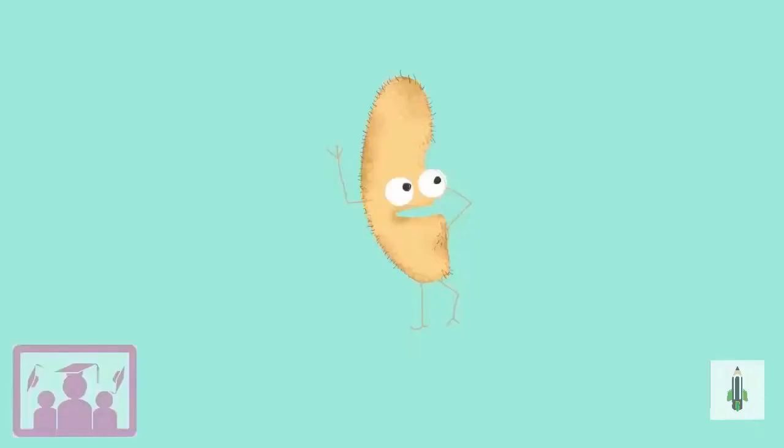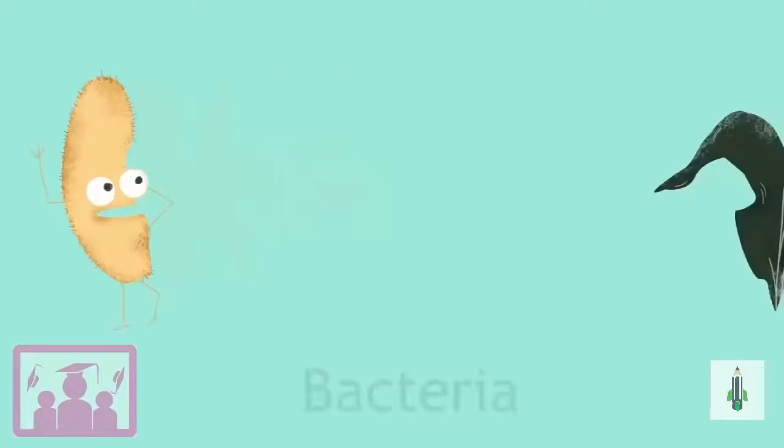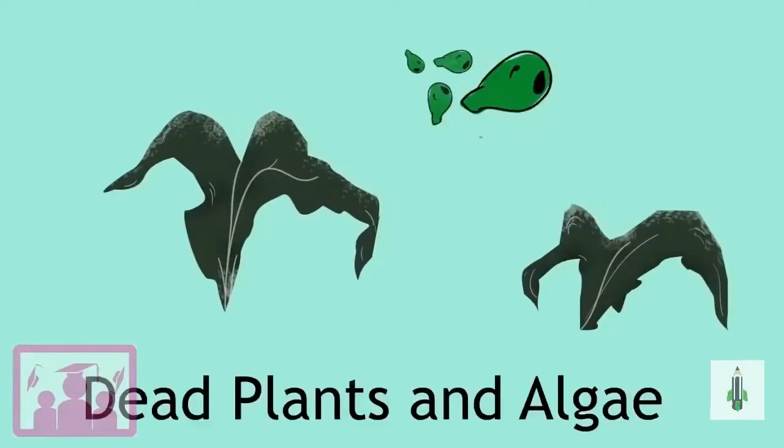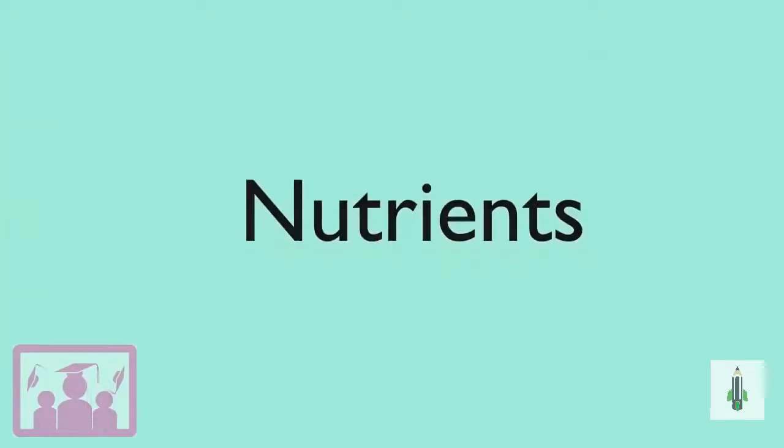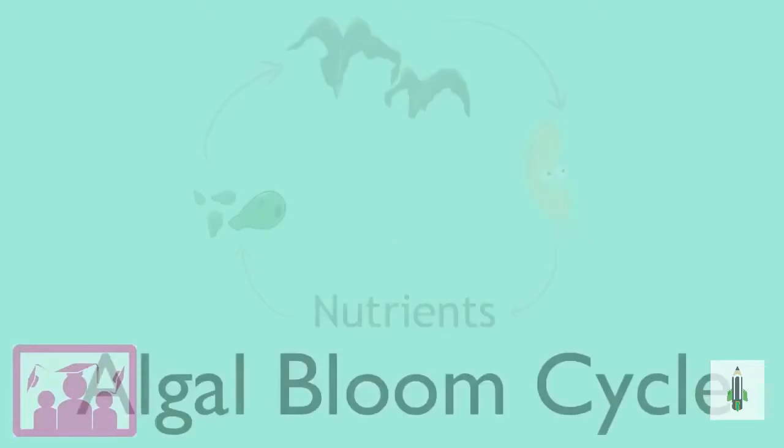Next, bacteria start to break down the dead plants and algae, releasing more nutrients back into the water and continuing the algal bloom cycle.